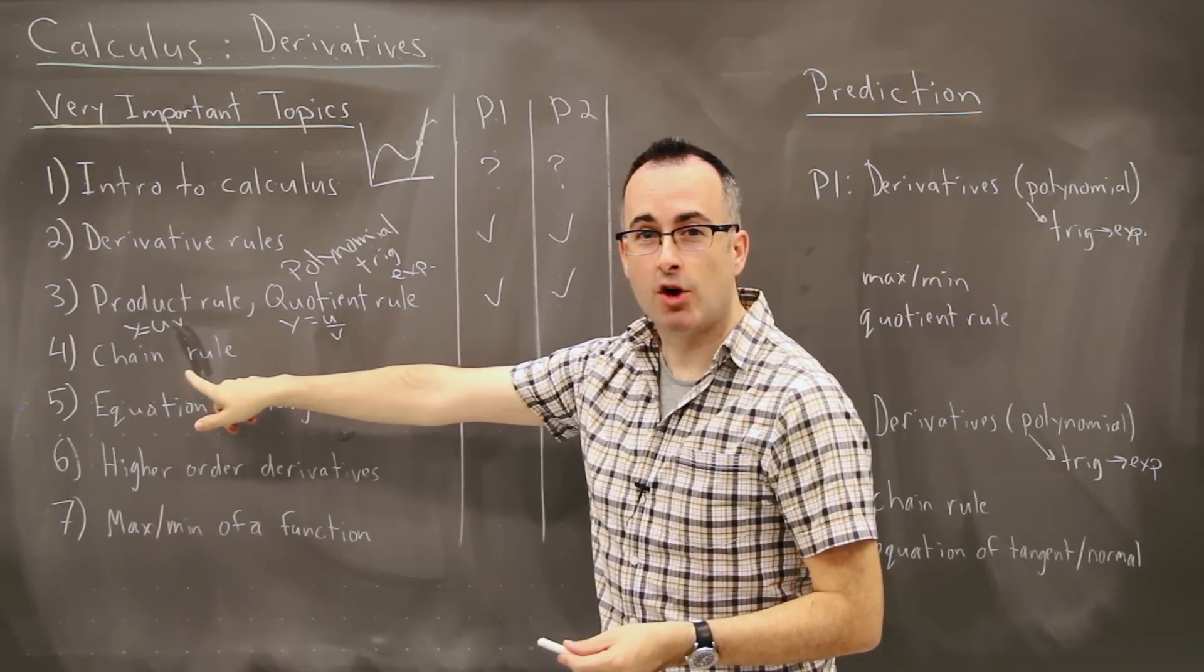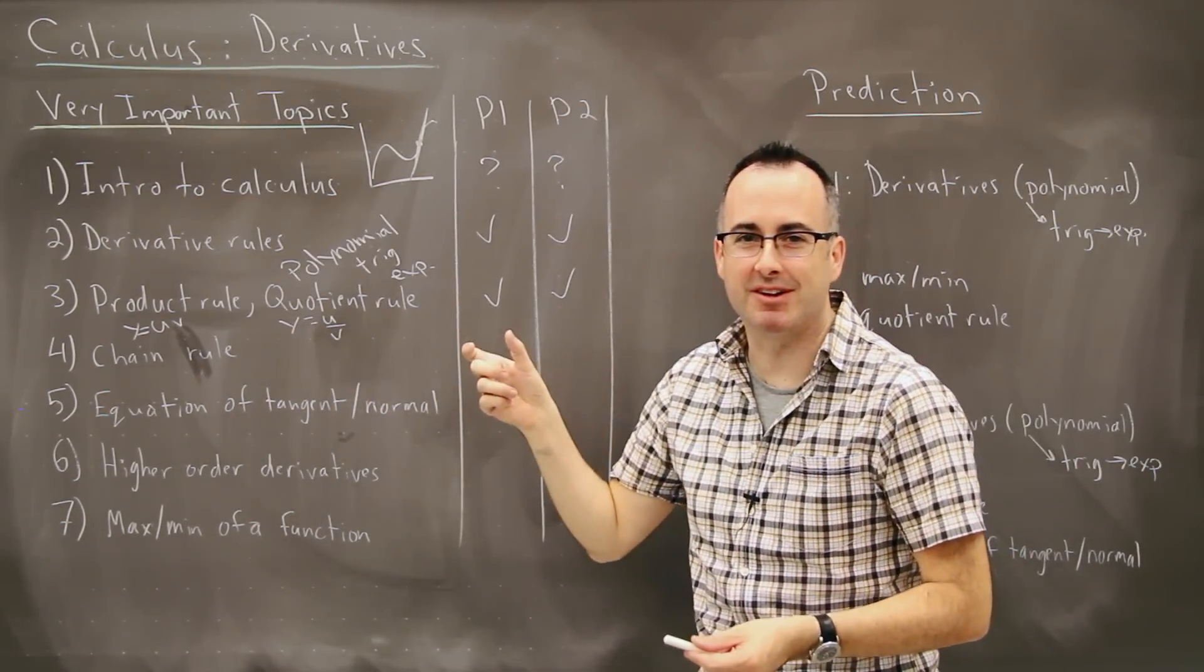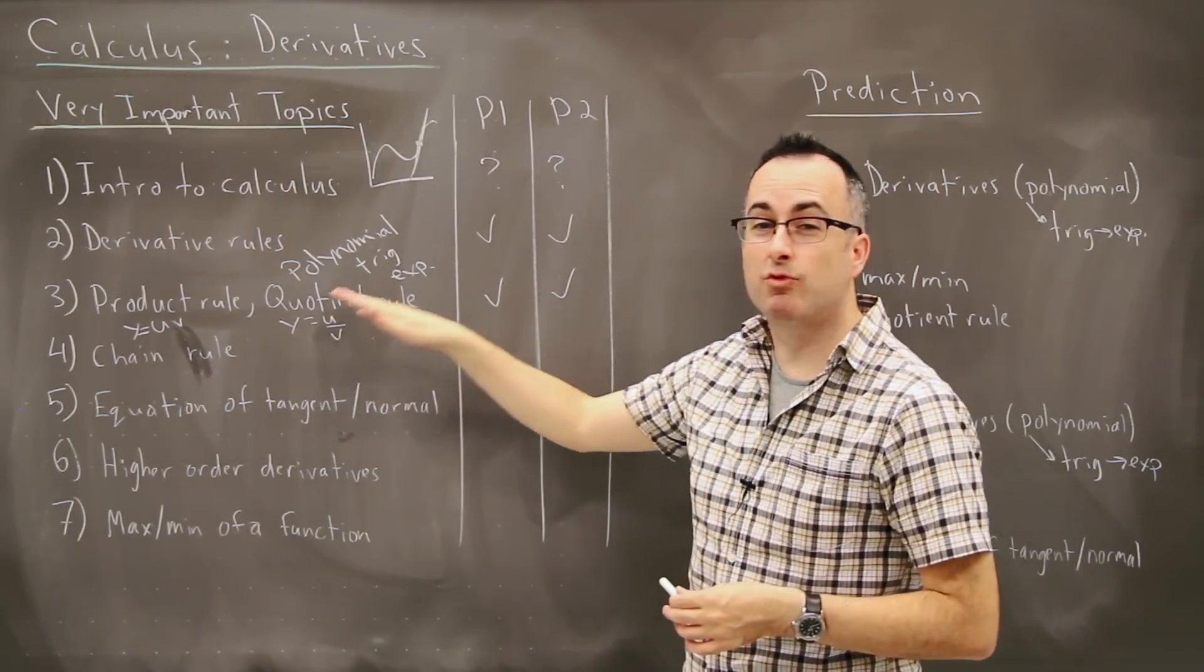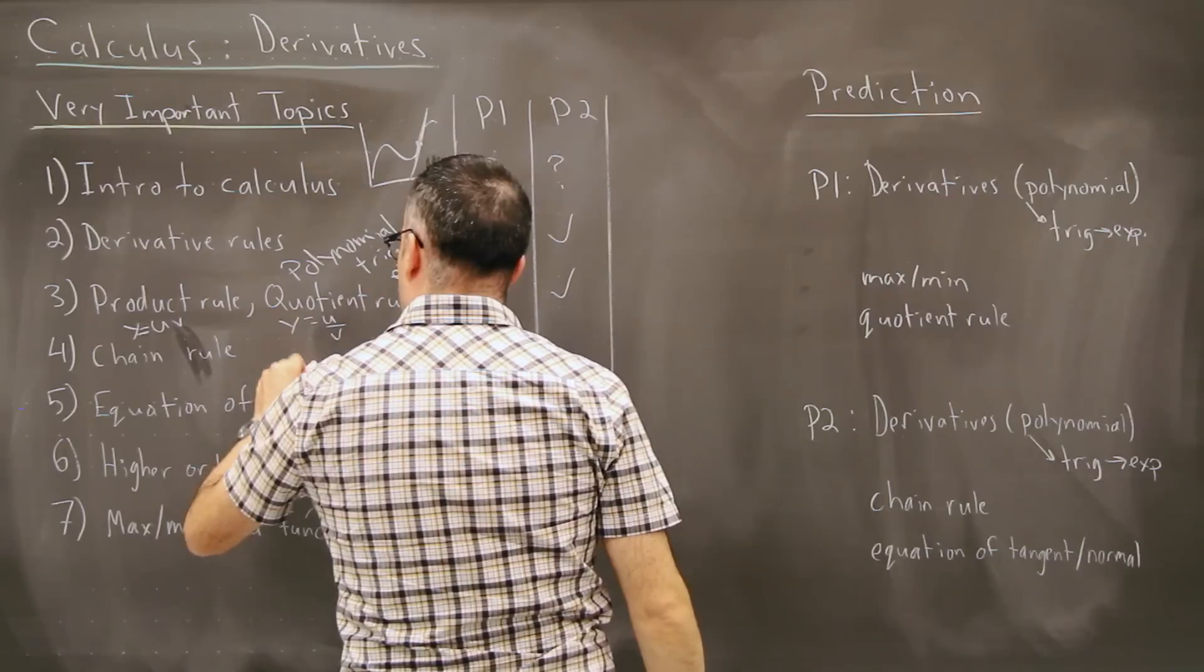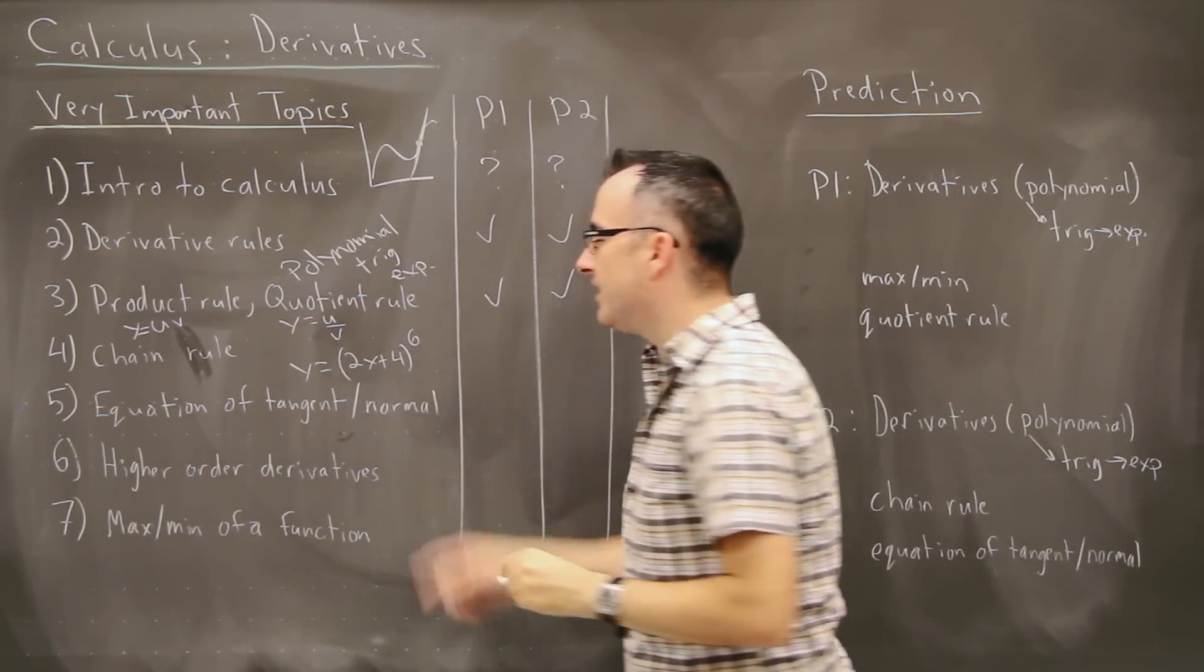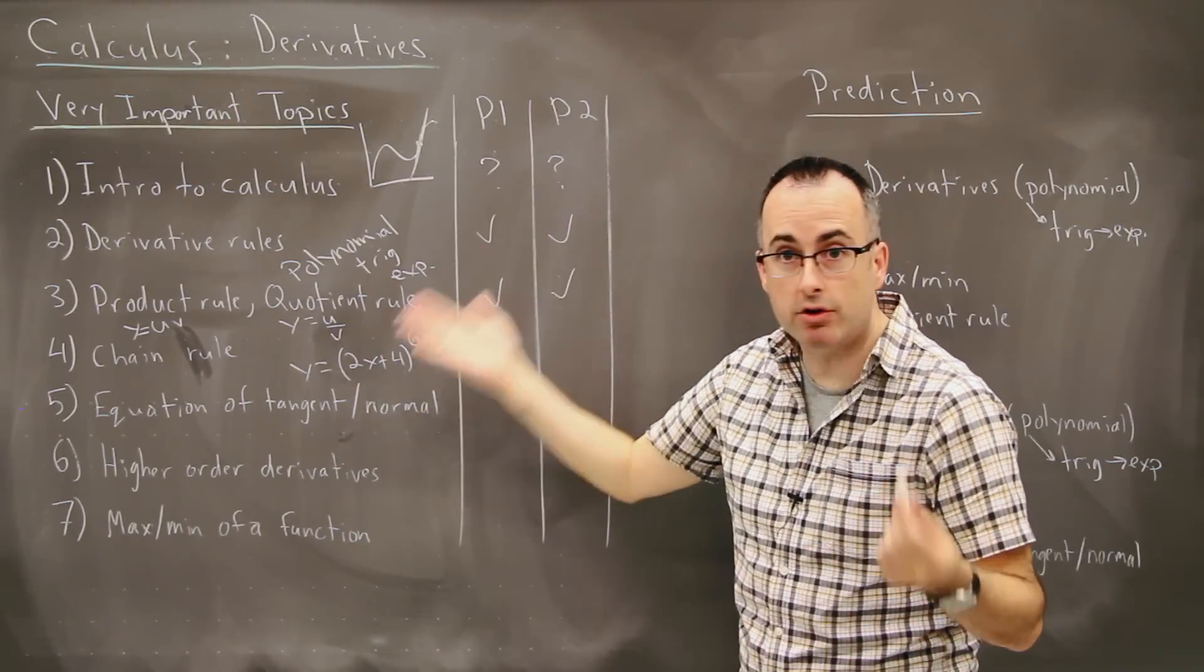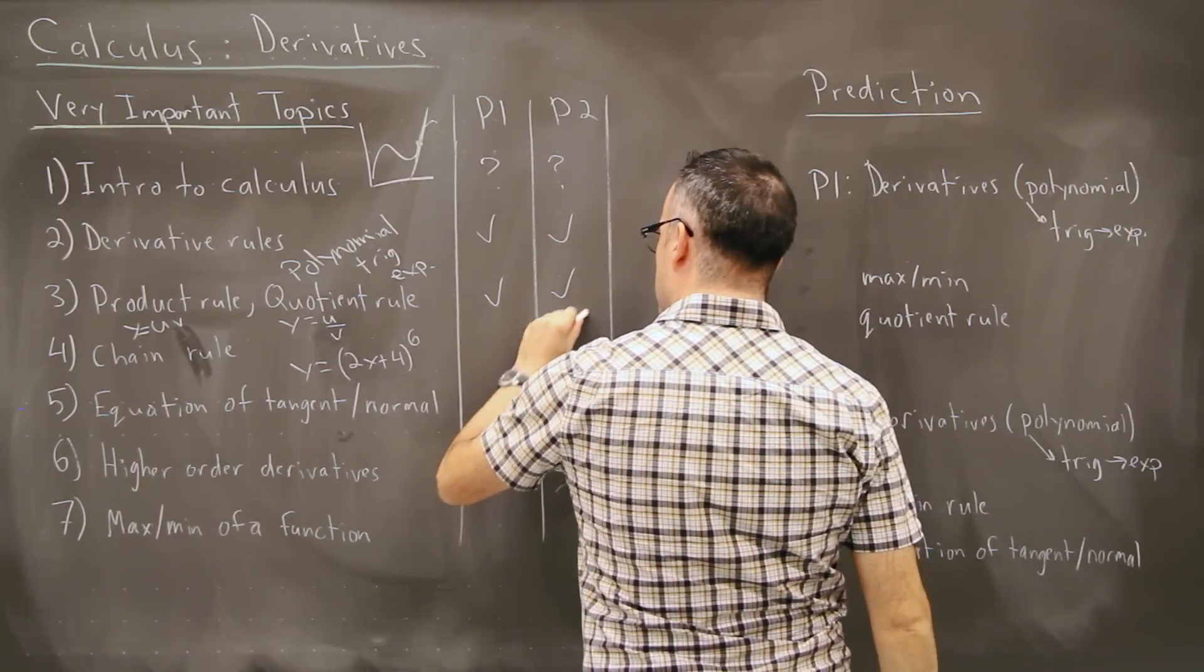Now we have something called chain rule. This is, what do you do if you have a function within a function? It's a bit like inception, something within something. But this chain rule is one that is really tough for a lot of students. So let's say you had like y equals 2x plus 4 to the power of 6, and you're trying to find the derivative of that thing. How do you do it? You have a function like something to the power of 6, and you have some junk in the middle. That's where I show you how to do it. That one most often shows up on paper two.